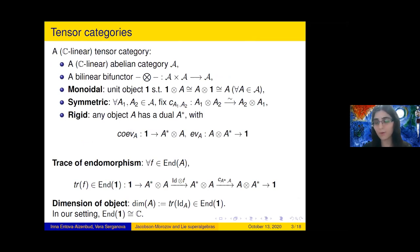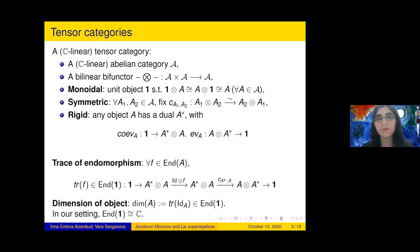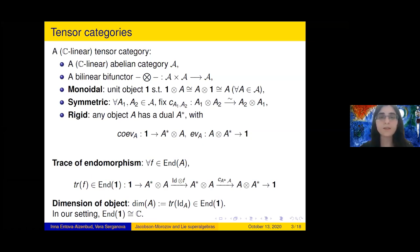In order to describe Lie superalgebras, I will start with what is a tensor category. My base field is C and all constructions will be C-linear. A tensor category is an abelian category A together with a bifunctor of tensor products, which should be bilinear. I require furthermore that my category be monoidal, meaning we have a unit object such that tensoring with it gives back the same object.